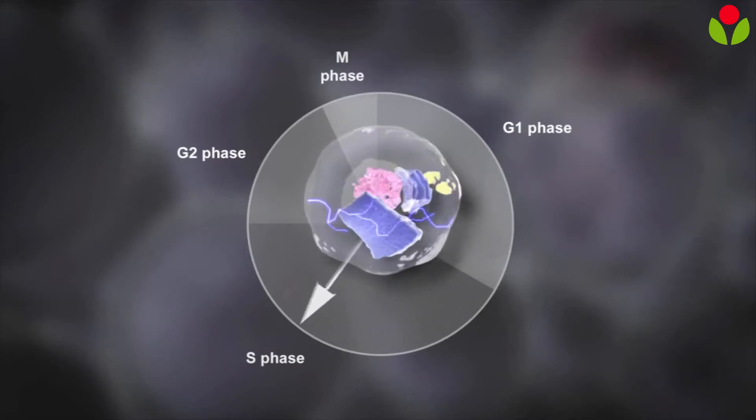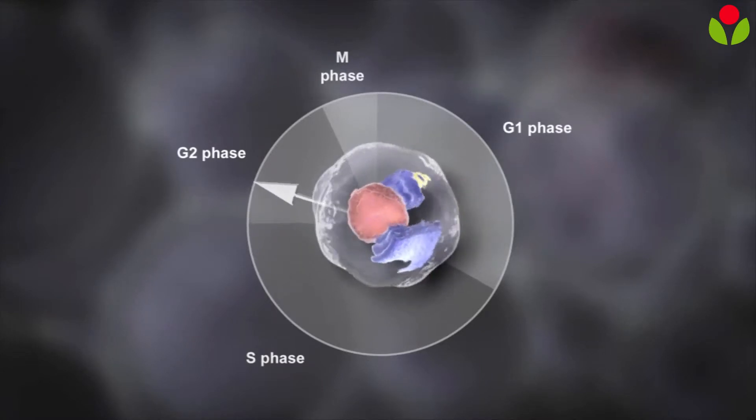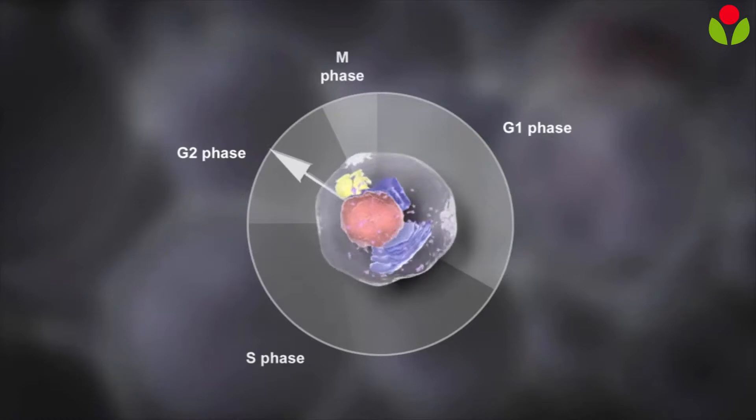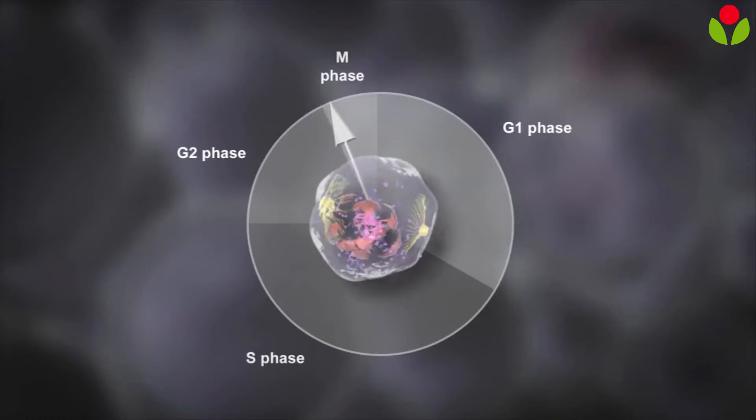After a second growth phase called G2, the cell continues to grow and make more proteins for the final stage. The cell finally splits into two cells and the two copies of DNA are distributed equally between the two daughter cells.